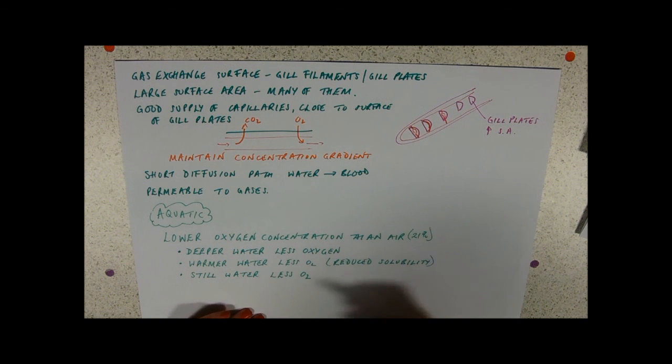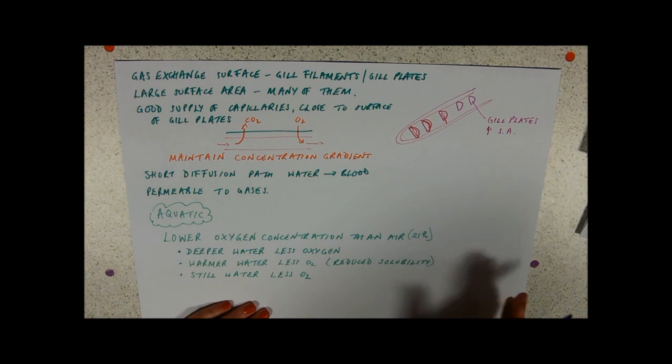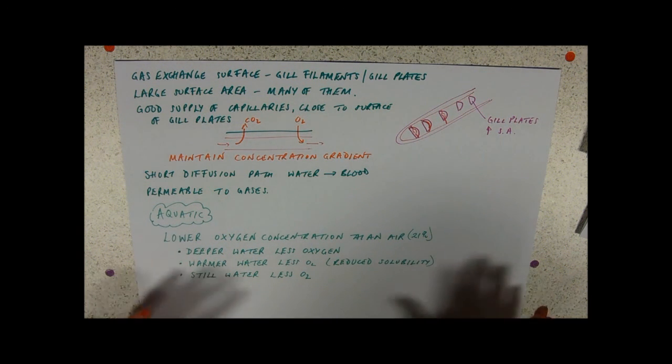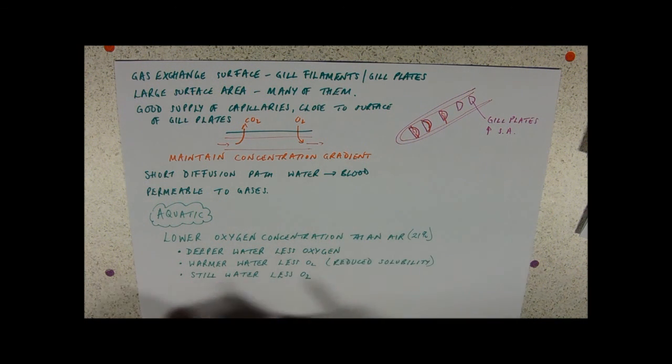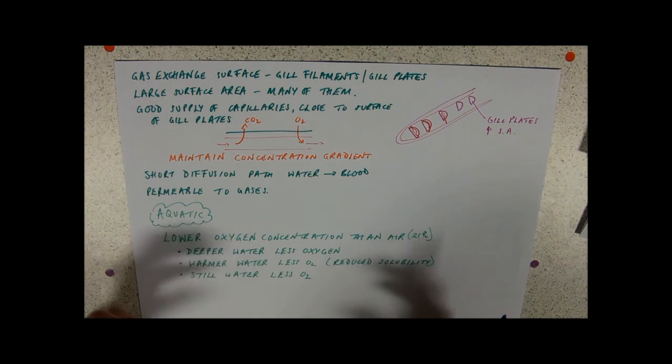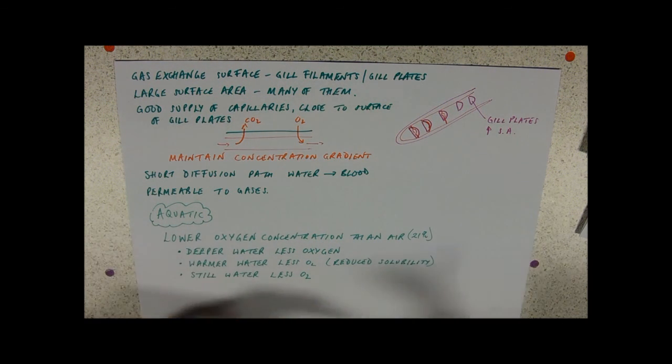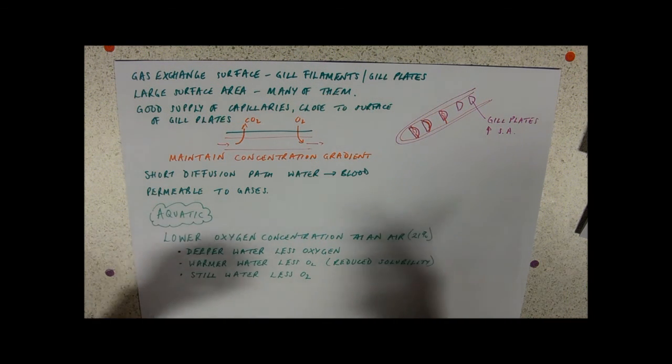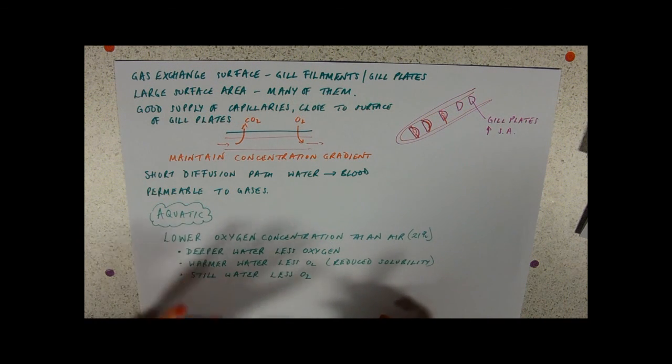So, things that will increase the oxygen constantly, amounts of oxygen in the water. Things like turbulence. So, things like fast flowing streams, fast flowing water, water tumbling over little rocks. That all, going over a weir, going over a waterfall. That's all going to oxygenate the water. So, they're the problems.